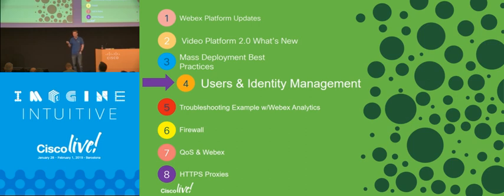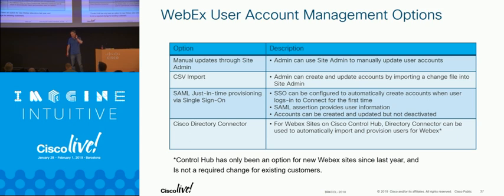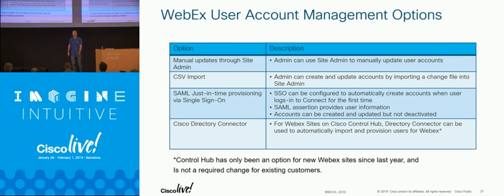Users and identity management is a really important topic — it's the first step when you deploy. The question is: where do users come from? When you have a classic WebEx site admin site, which is 90-something percent of all WebEx sites, there are only four methods. One: manually add users in site admin — very painful at scale. Two: CSV import — also painful, you export from AD, format in the right template, upload to WebEx. Three: SAML just-in-time account provisioning — you check auto account create with SAML JIT in site admin, configure single sign-on in your identity provider, and as soon as there's a successful authentication, if the user doesn't have an account, we create it. Four: the new way — Directory Connector.